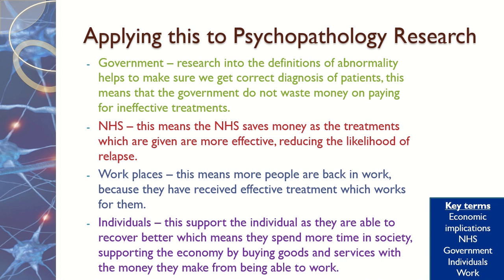For psychopathology research, I have an example that links to all four areas. For the government, if we research the definitions of abnormality and can correctly diagnose patients — so people who do have mental health disorders are diagnosed correctly, and people who need support are also identified effectively — then the government doesn't waste money on ineffective treatment. For example, we're not giving someone with schizophrenia antidepressants because they were accidentally diagnosed with depression. This also saves the NHS money because effective treatment reduces the likelihood of relapse — if people with depression are given the right treatment, they're less likely to relapse and the NHS doesn't have to pay for more therapy on top of what they've already funded.